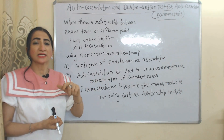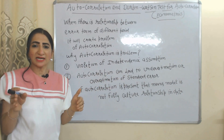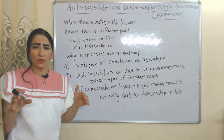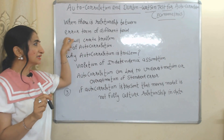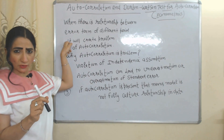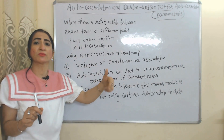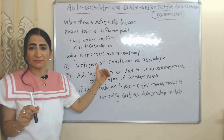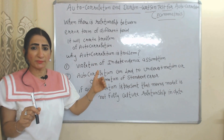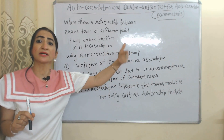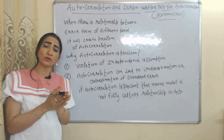That means there is no relationship between the error terms of different periods. But in the case of autocorrelation, there is some relationship between error terms of different periods — that means the error term of period 1 is related to the error term of any other period.